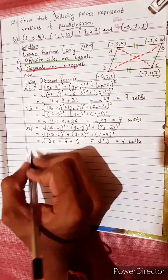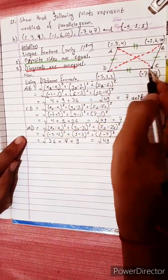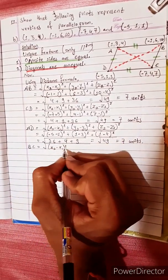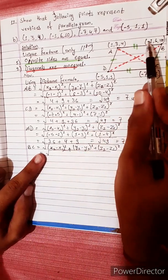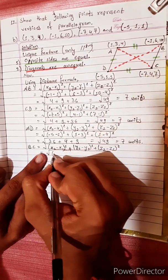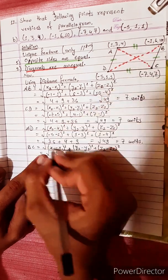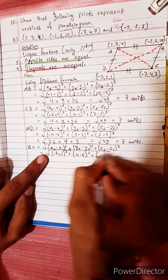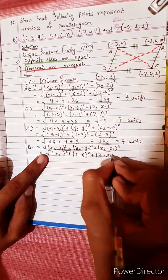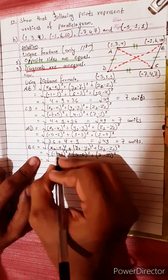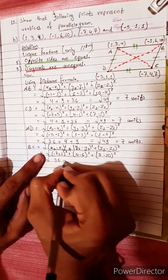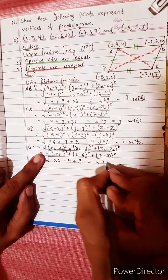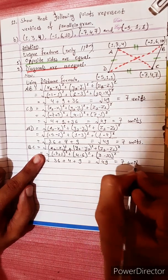Now BC equals, using the distance formula: x1 is B(-1, 6, 10), x2 is C(-7, 4, 7). So (-7 - (-1)) = -6, squared is 36; plus (4 - 6) = -2, squared is 4; plus (7 - 10) = -3, squared is 9. So 36 + 4 + 9 = 49. Square root of 49 equals 7 units.